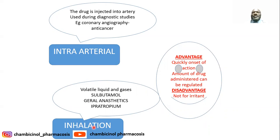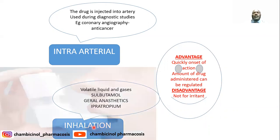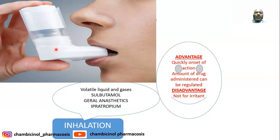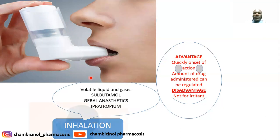Once the inhalation administration is discontinued, the drug can diffuse back and be excreted through exhaled air — so termination of the drug effect is easy. The disadvantage is that the drug should not be irritant in nature, as it can cause irritation of the mucous membrane of the respiratory system. Examples include salbutamol, ipratropium, and inhaled corticosteroids administered through a nebulizer.